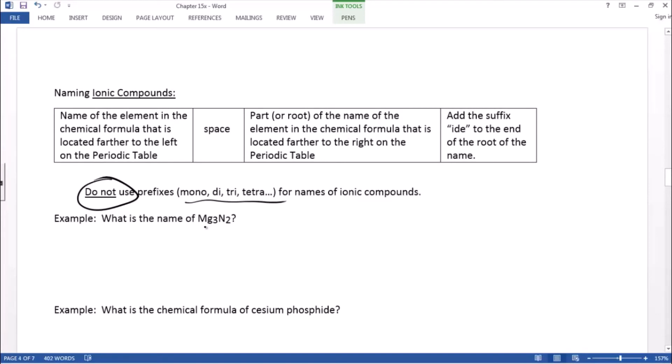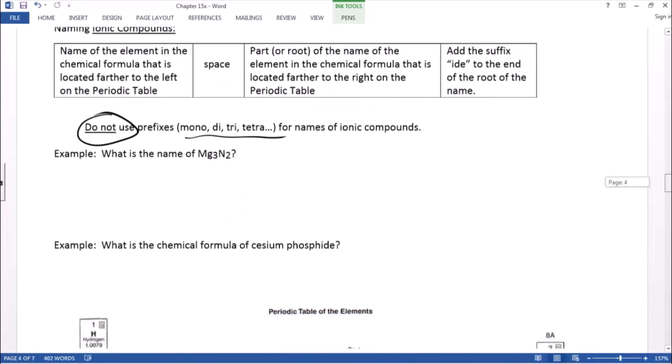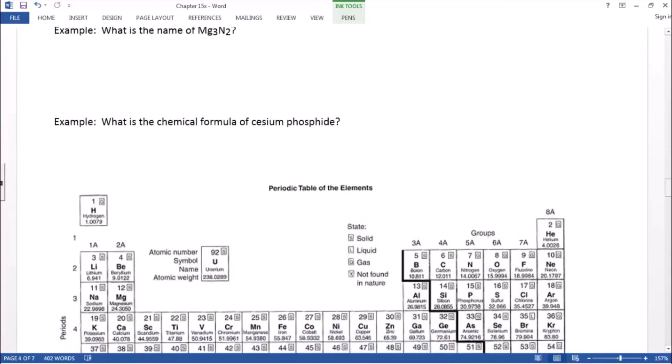So here's another example. We got Mg3N2. Take a look at the periodic table. Mg is right here. It's magnesium, right? So the ionic compound's name is take the element name of the first one, the metal, and take the root of the non-metal name. Well, nitrogen is N. So just take the nite part and then add the suffix ide, magnesium nitride.